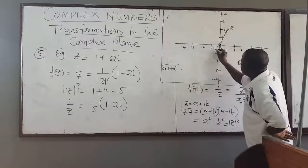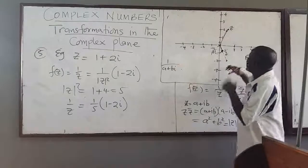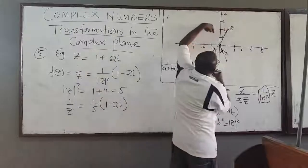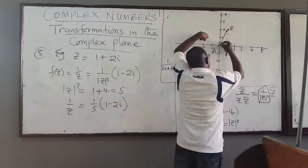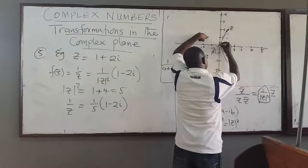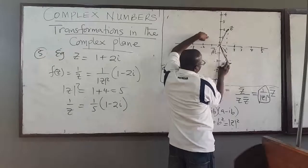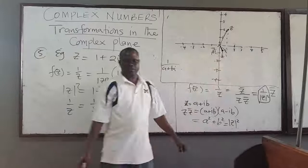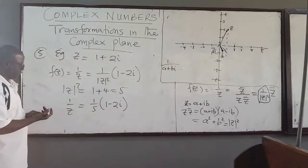Whenever you take the inverse of a complex number, you are doing a reflection about the real axis, but you don't get as far because you scale it and reduce it. So that was the inversion transformation. I hope that is clear.